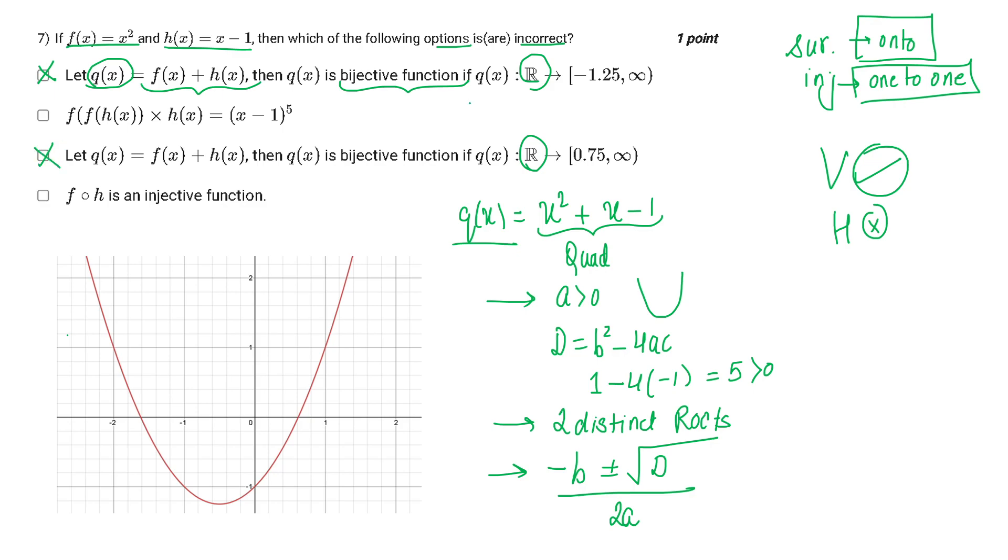Similarly, option C is wrong. Why? Because both are talking about bijective function, but with different range. The range in one was 0.75 to infinity. If you make a horizontal line here, it is still cutting the graph at two points. Therefore options A and C both are wrong.